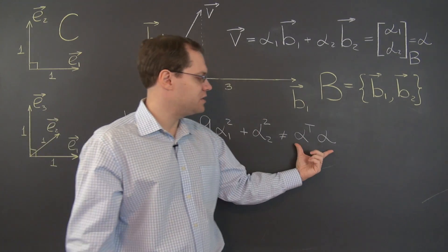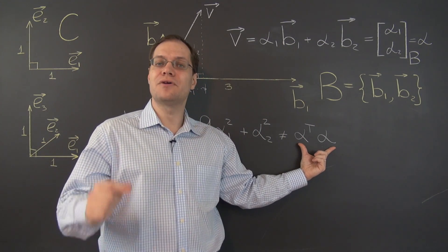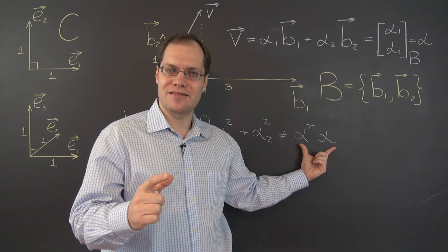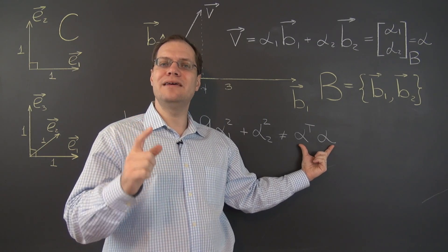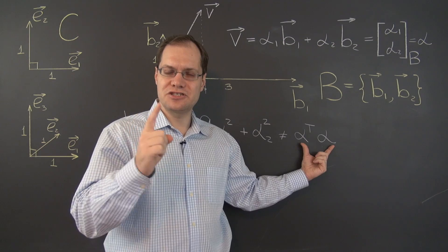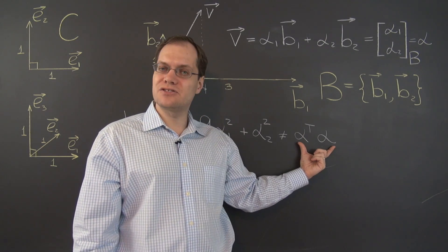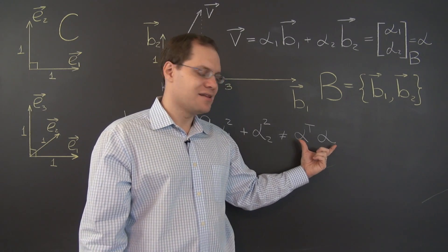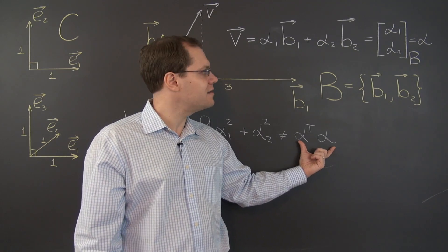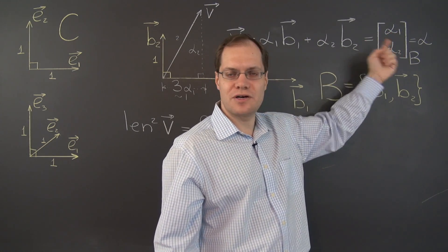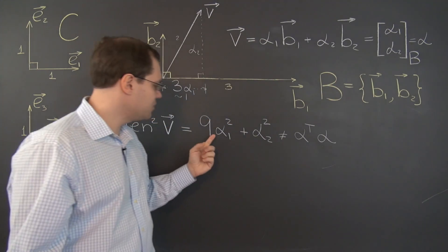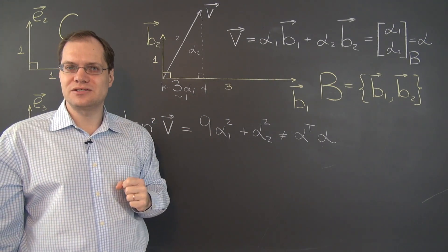Another important thing to realize is that when you see this as a representation of the length of a vector, that immediately implies Cartesian basis. And if the basis is no longer Cartesian, this expression is no longer valid, because this expression is of course alpha 1 squared plus alpha 2 squared, and we need 9 alpha 1 squared.